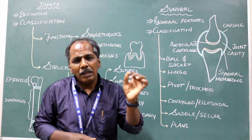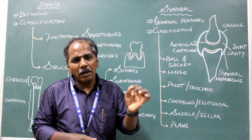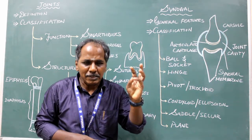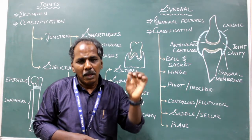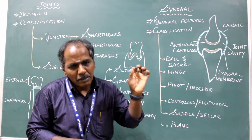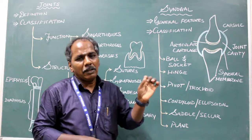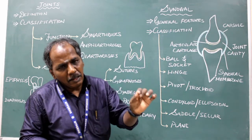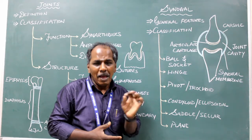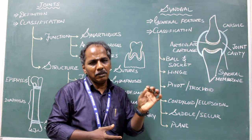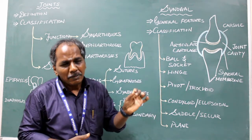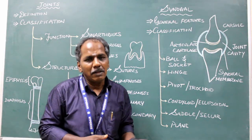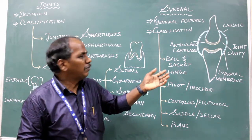Further examples of ball and socket variety: the incudo-stapedial joint, that is the joint present in the ear ossicles — malleus, incus, and stapes. And the talocalcaneonavicular joint, which is the joint present in the foot between the tarsal bones.